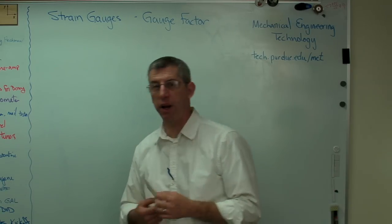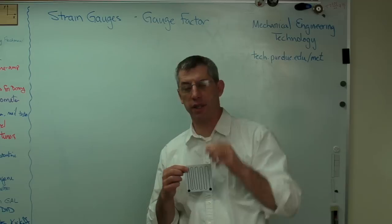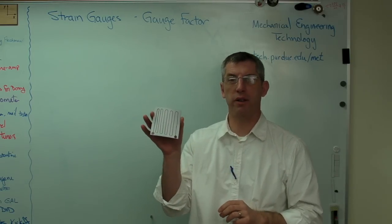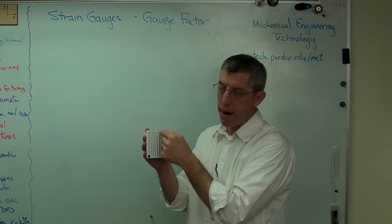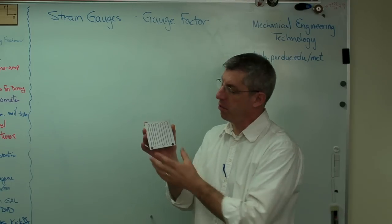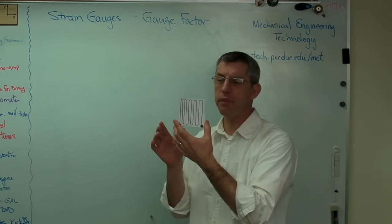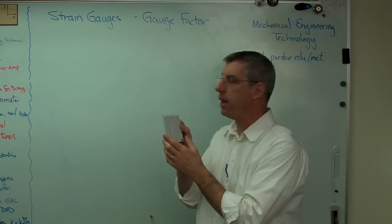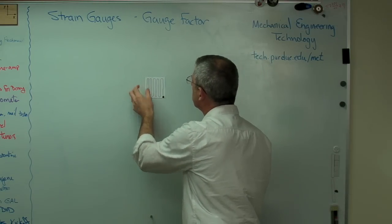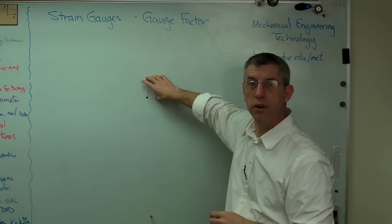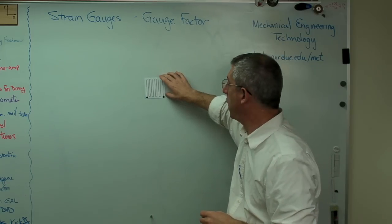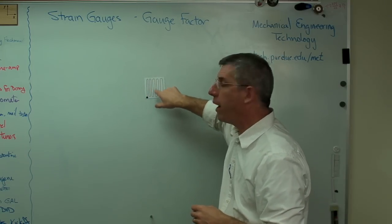Now I made a little imaginary strain gauge. Real strain gauges are little tiny things, so this is my imaginary strain gauge. What I've got here is a wire that's wrapped back and forth on a plastic substrate. The idea is that if you stick that to something, stick that to a structure that's undergoing stress and therefore undergoing strain, the length of that wire will change.